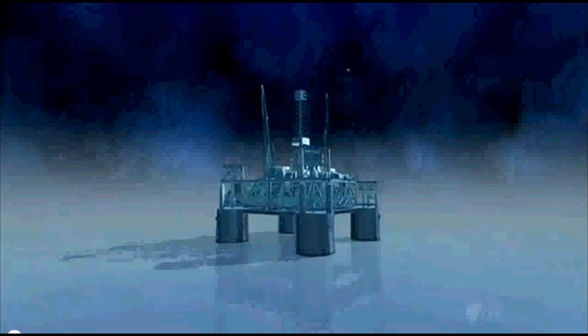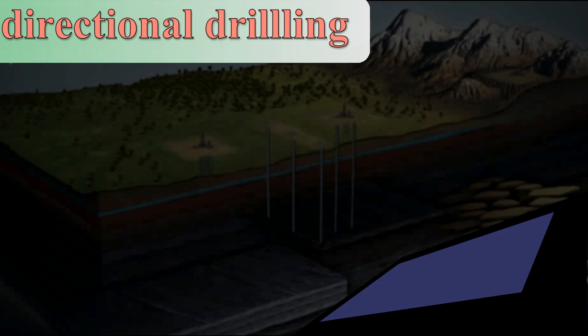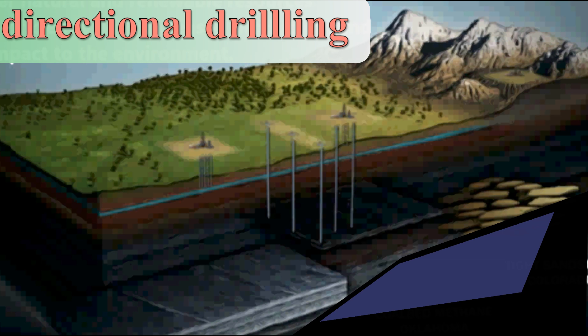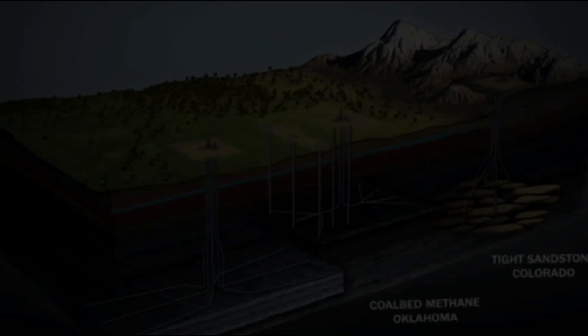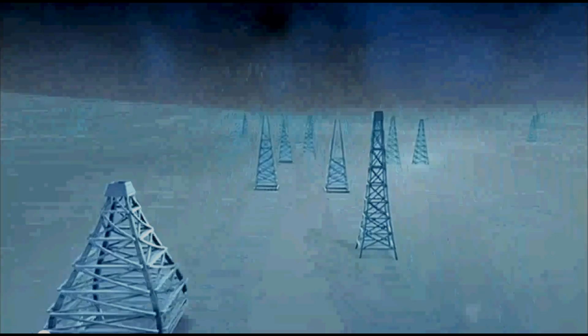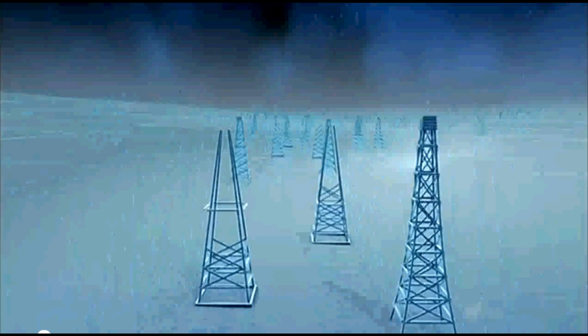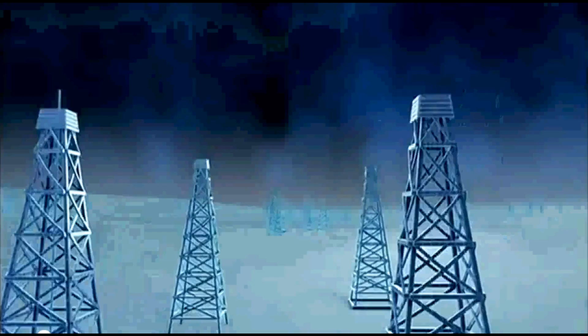Two relatively recent advances over the last several decades have expanded the ability of the industry to extract more oil and gas in places that were previously inaccessible. First, directional drilling and its offshoot, horizontal drilling, have revolutionized the way drilling is done. Directional drilling was first developed when the industry moved offshore. Prior to that, wells were drilled vertically or relatively straight down. When drilling was exclusively on land, a rig could more easily and cheaply be moved to a new location to drill another vertical well.